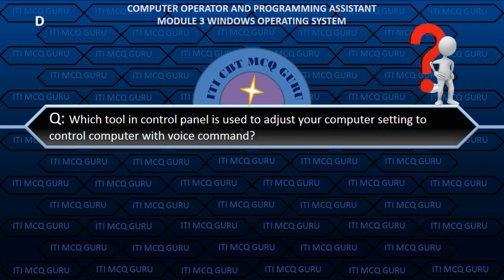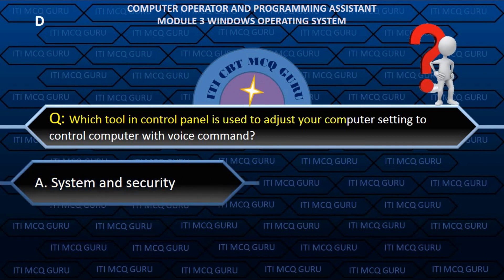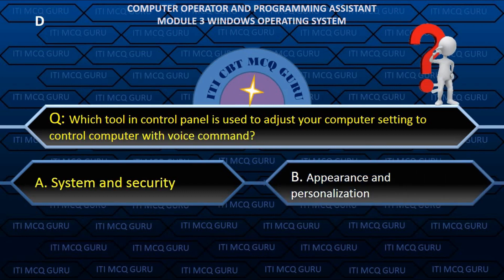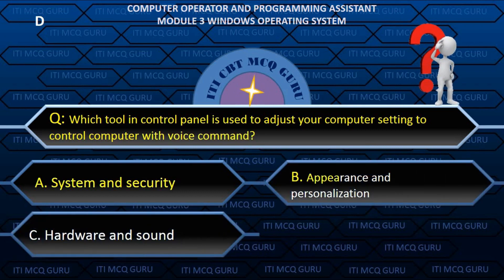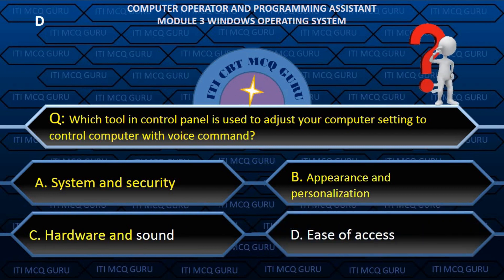Which tool in Control Panel is used to adjust your computer settings to control the computer with voice command? D. Ease of Access.